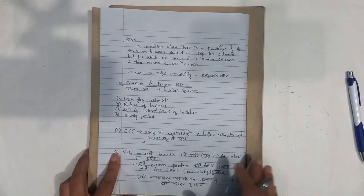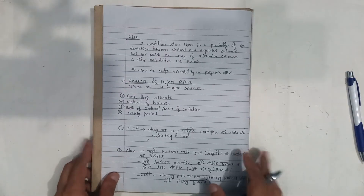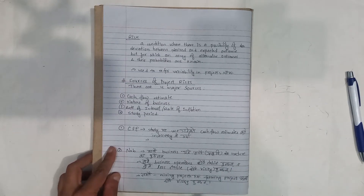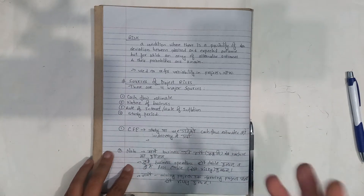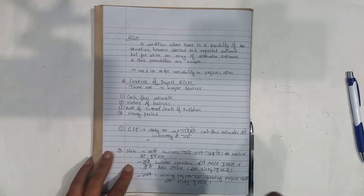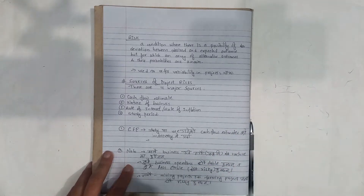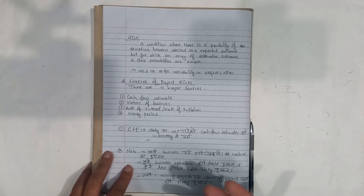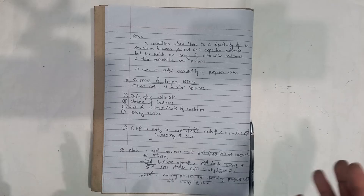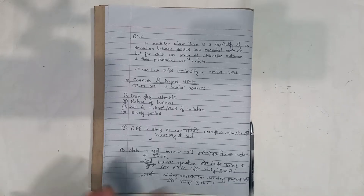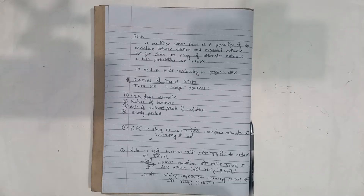So, what is risk? Risk is a condition where there is a possibility of deviation between the desired and expected outcome, but for which an array of alternative outcomes and their probabilities are known. The risk is a deviation, and it also represents a different opportunity. If there is an occurrence or an outcome, then there is a probability — a possibility.